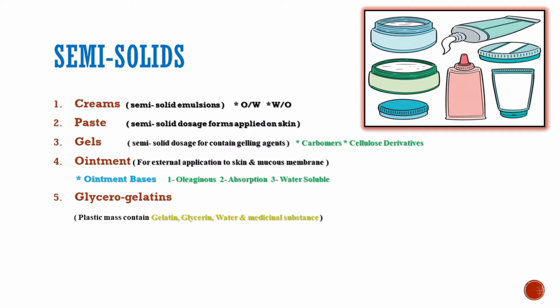Ointments are basically used for external application to the skin and mucous membranes. An important component of an ointment is an ointment base, which may be oleaginous, absorption, or water-soluble base. Glycerogelatin is a unique semi-solid dosage form which is a plastic mass that contains gelatin, glycerine, water, and medicinal substance in various proportions.